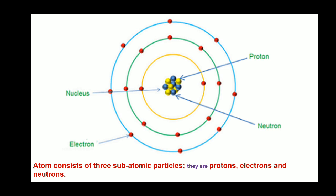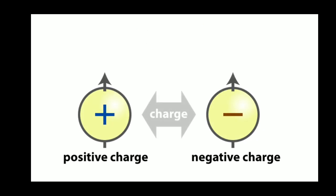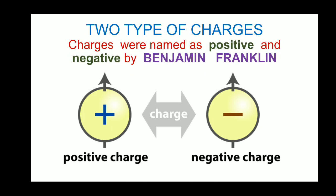Atom consists of positive as well as negative charges — that is proton and electron. We are going to study how proton and electron behave when at rest. There are two types of charges: one is positive charge and another one is negative charge. Charges were named initially as positive and negative by the famous scientist Benjamin Franklin.